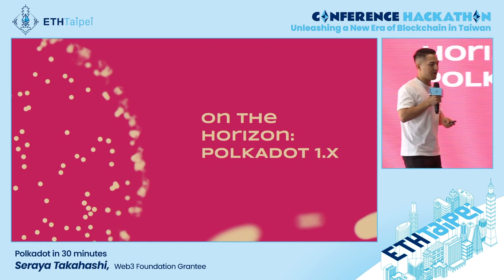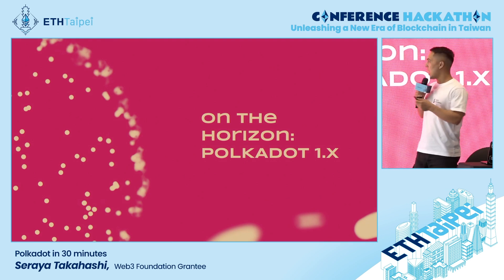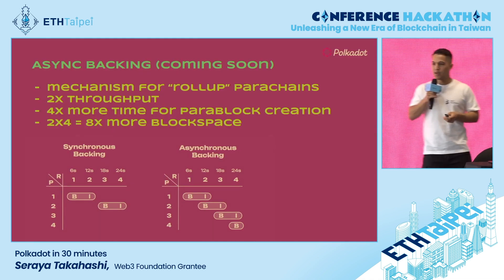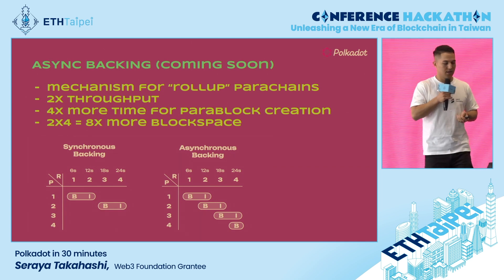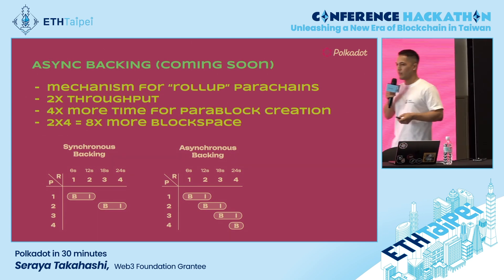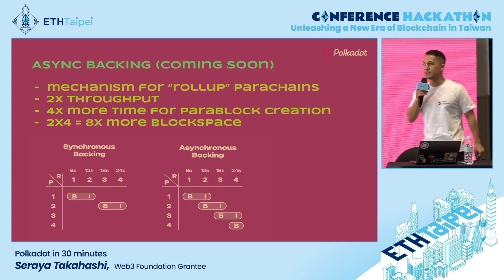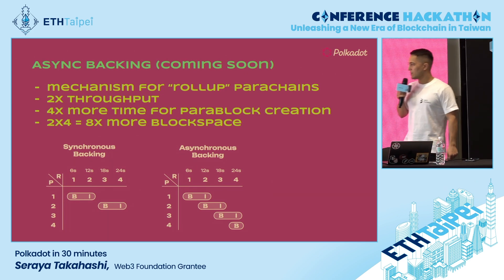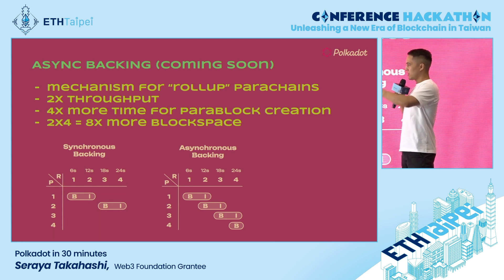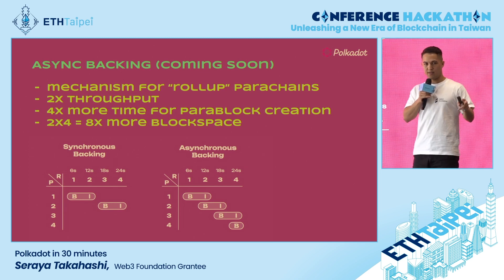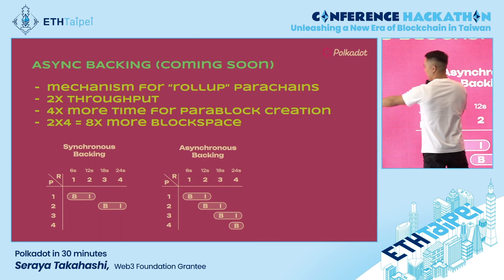That's it for the first part — the current state of Polkadot. In the next part, I'll introduce some upcoming features already being tested and rolled out. First: asynchronous backing. Backing is the mechanism for rolling up parachains to the relay chain — connecting the two and ensuring safety. Currently this is done synchronously and takes 12 seconds, because the relay chain block time is 6 seconds, meaning it takes two relay chain blocks to be secured.